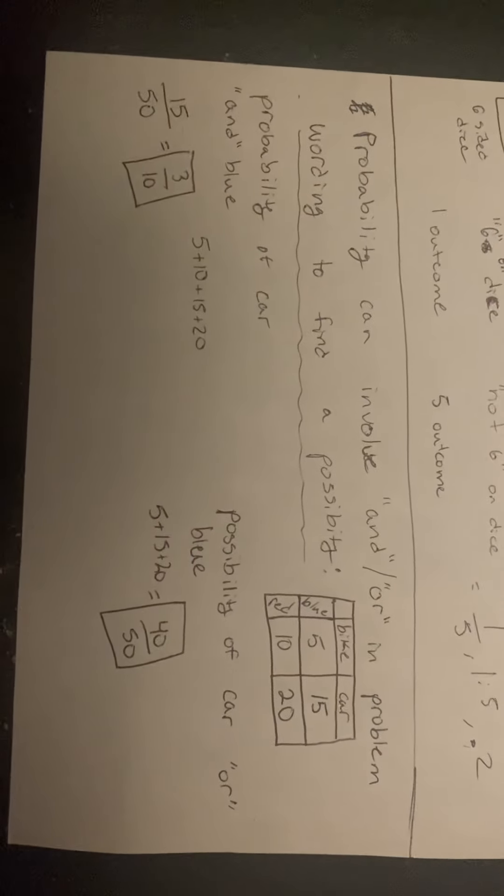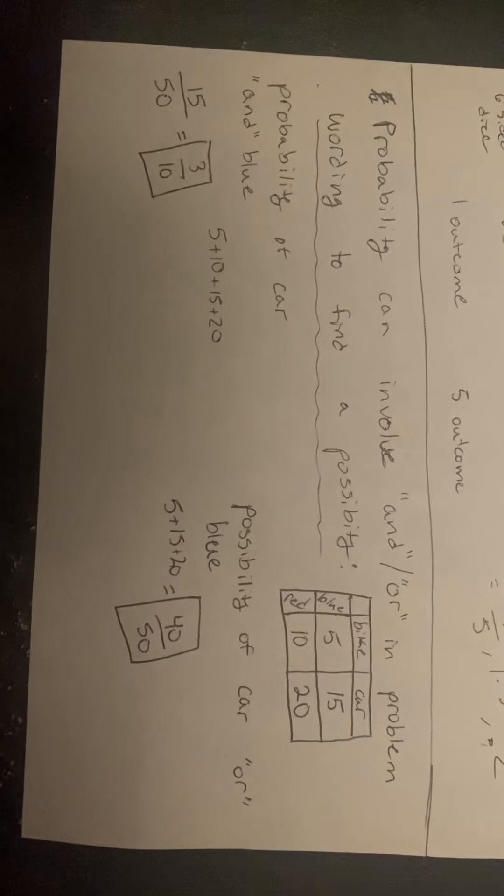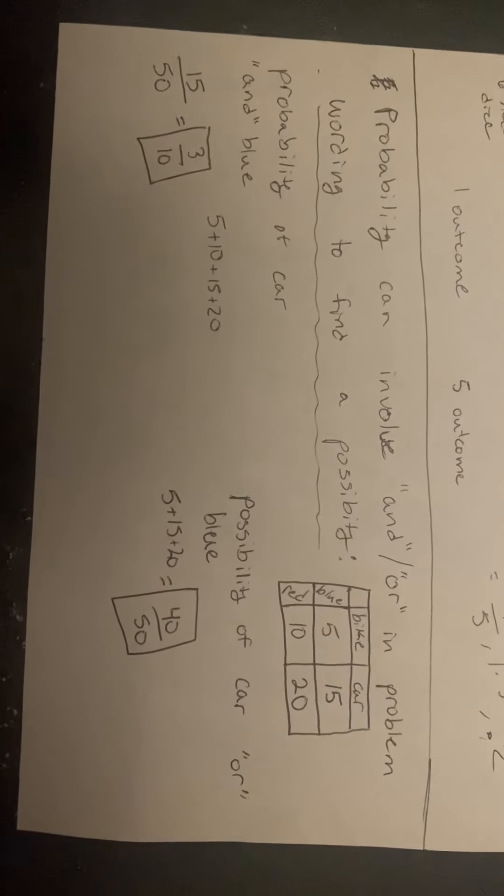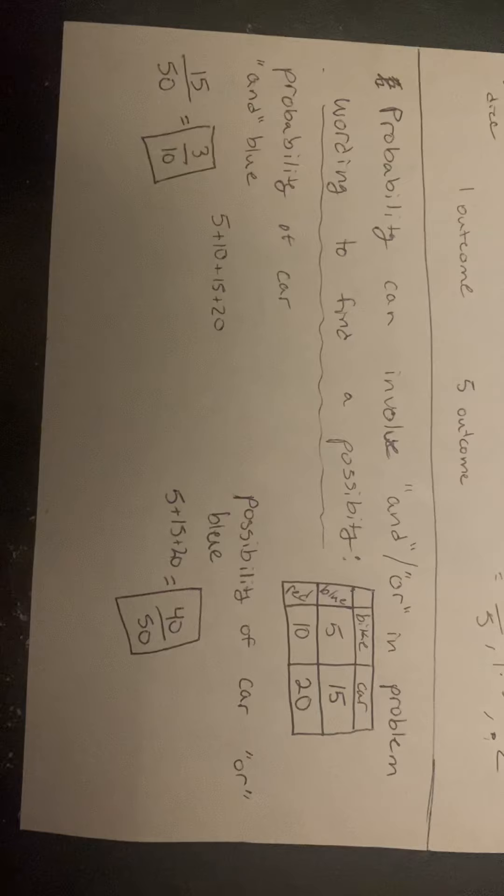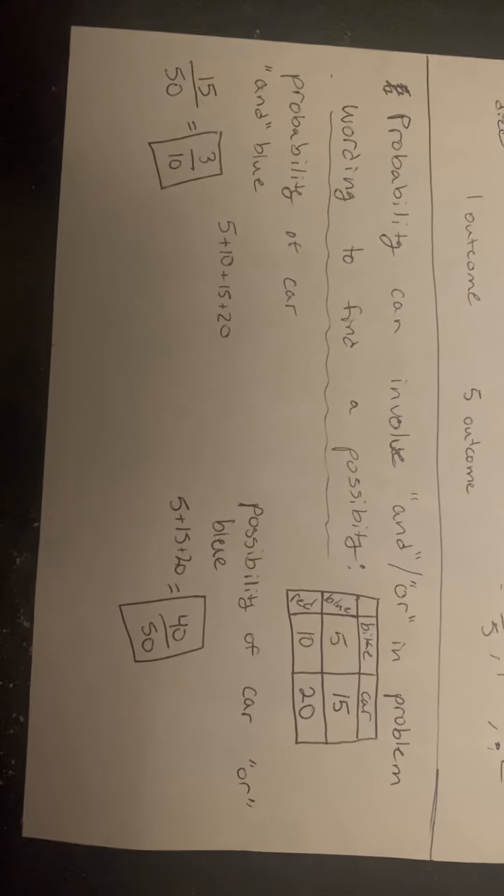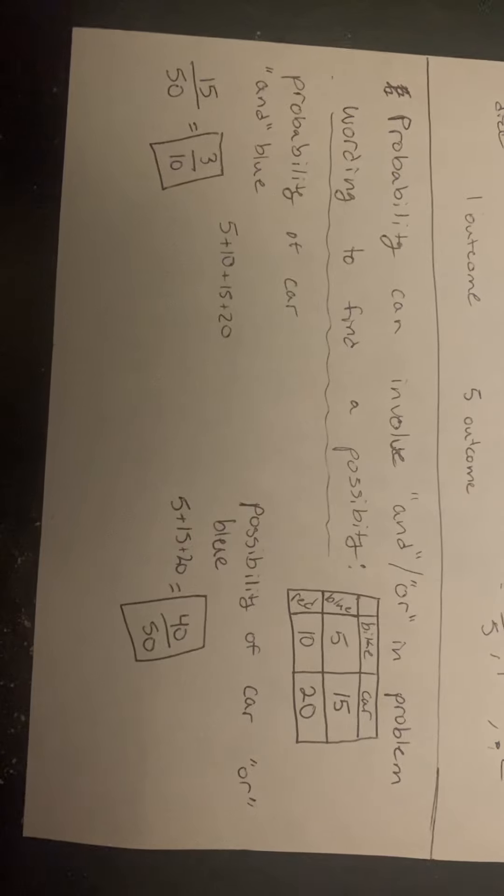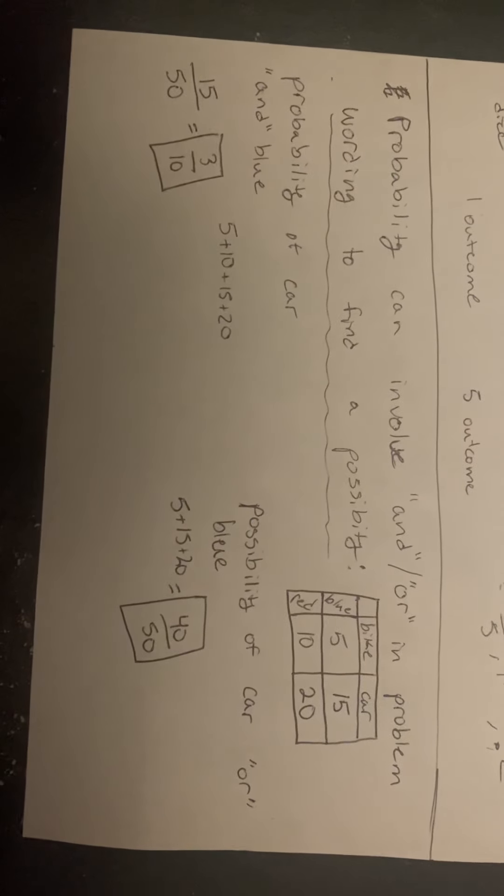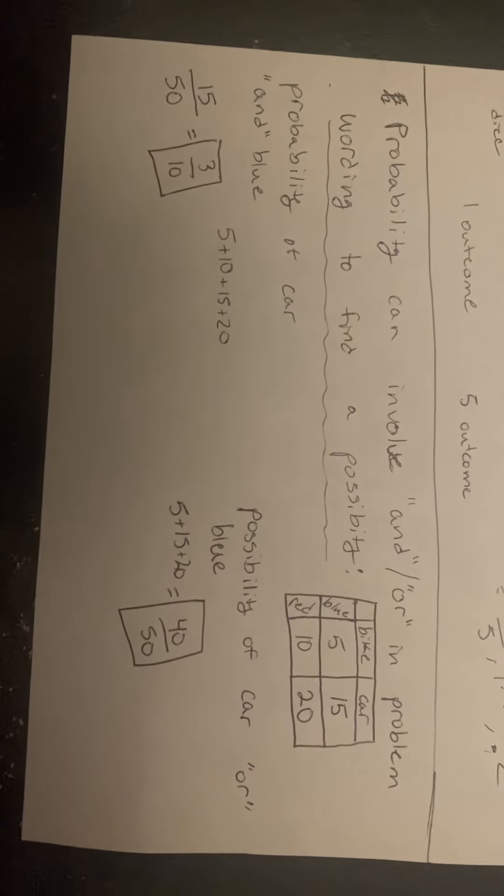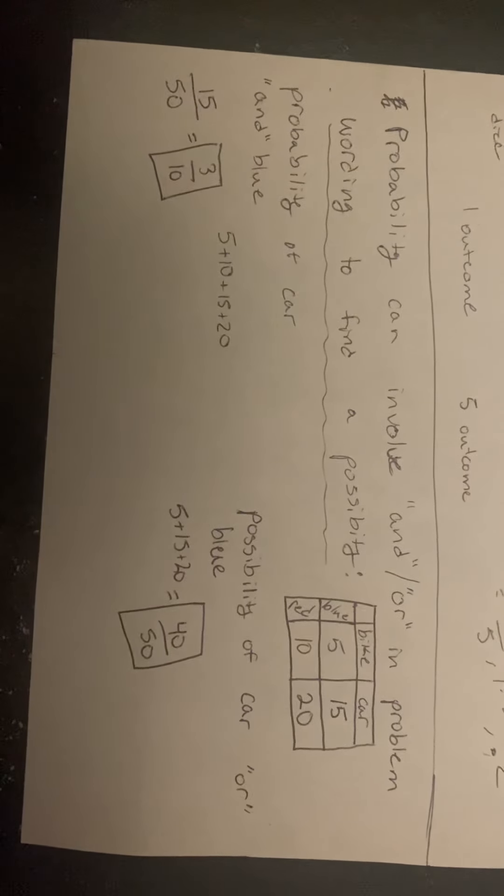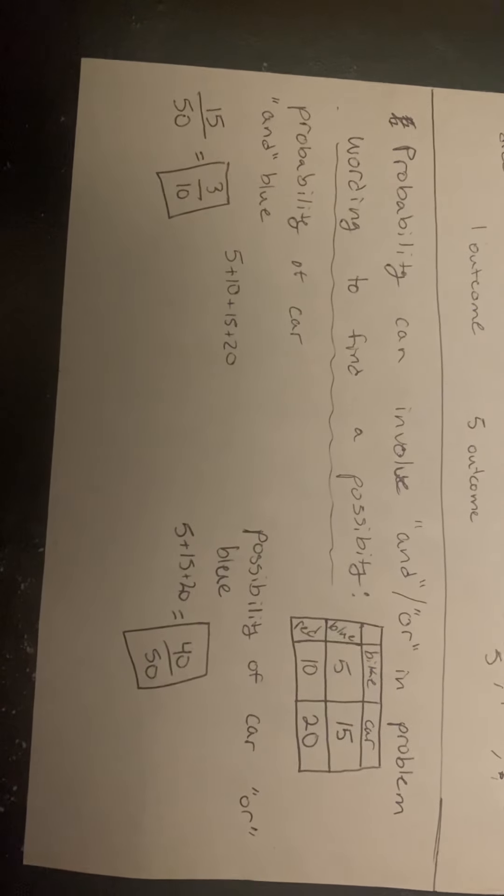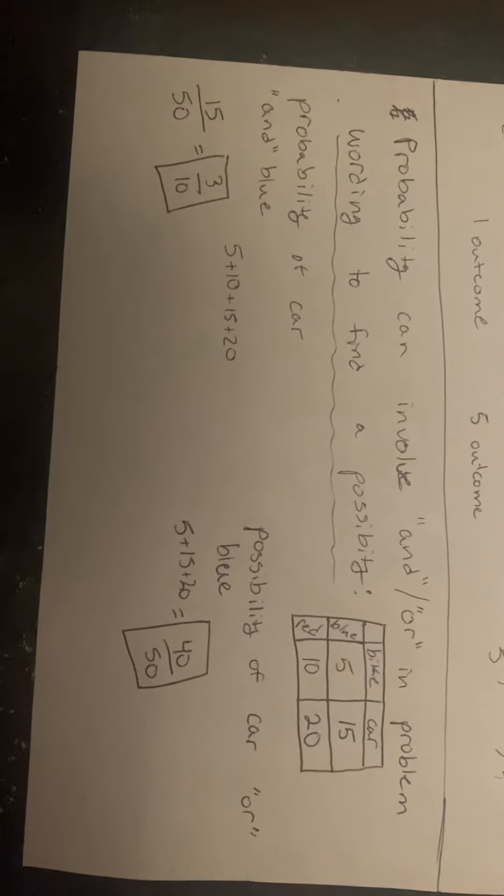As you can see, there are 5 blue bikes, 15 blue cars, 10 red bikes, and 20 red cars. To find the probability, we first must add the total amount of cars and bikes of each color to find the total possible outcomes. When we add 5 + 10 + 15 + 20, we get 50.